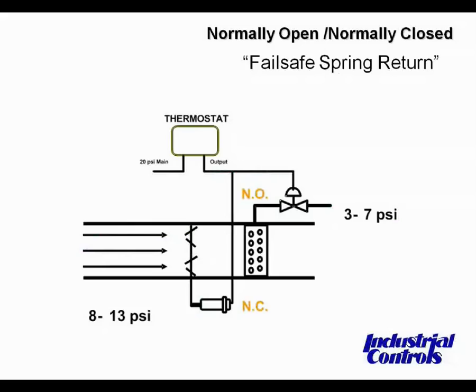Why in each case? The outdoor air damper should fail closed to protect the coil from freezing. The valve on the preheat coil should fail open. This will also protect the coil from freezing and will provide tempered air to the system. Two actuators used on the heating side of the system, yet each require a different safe action.